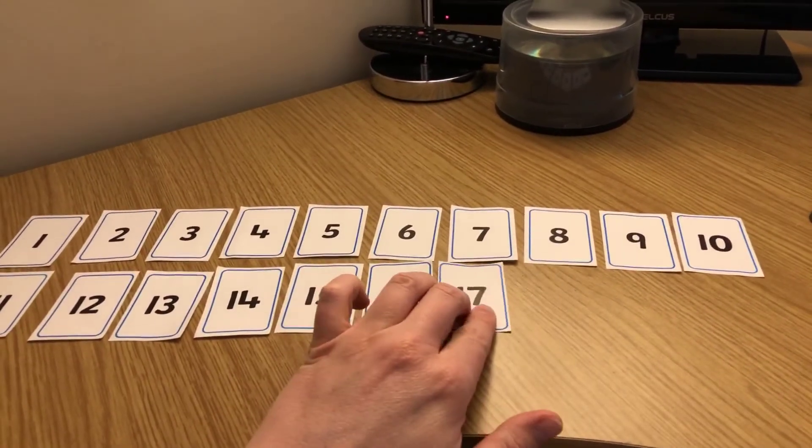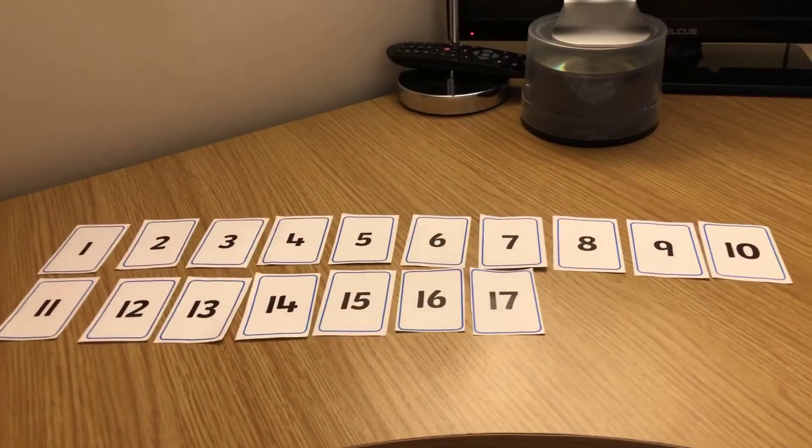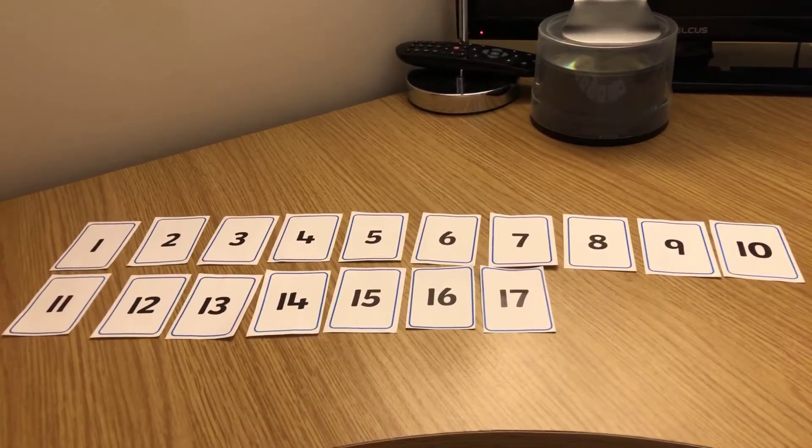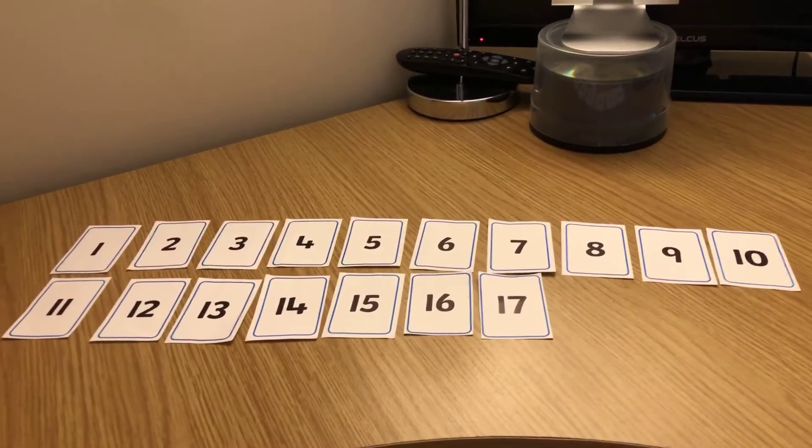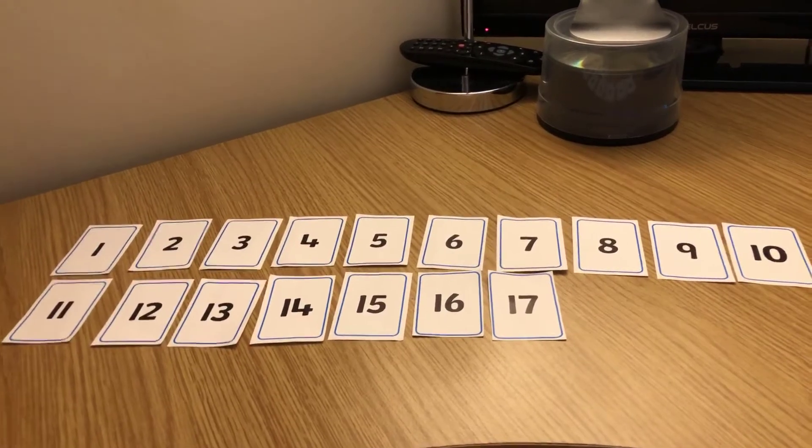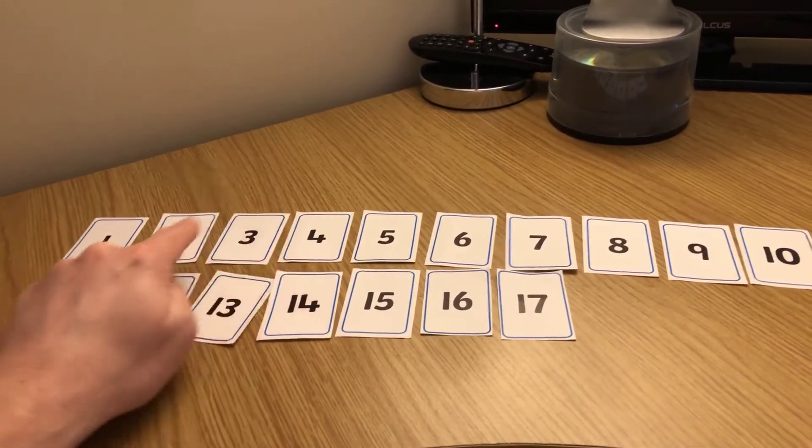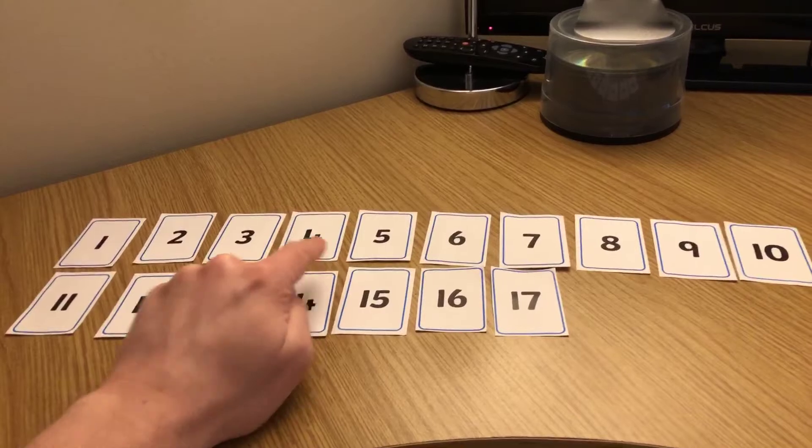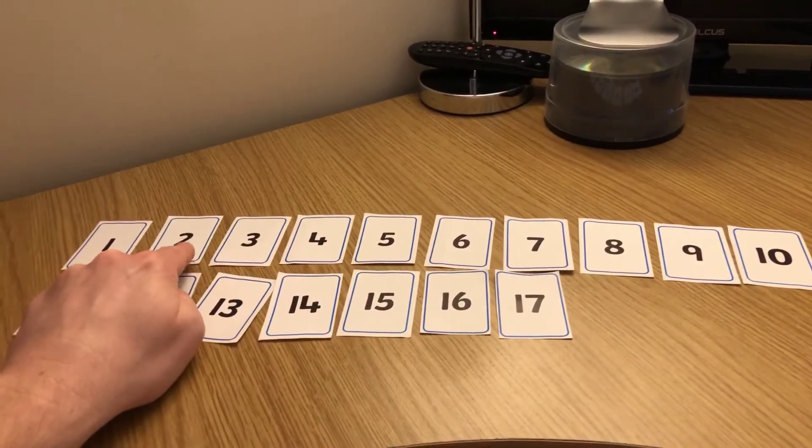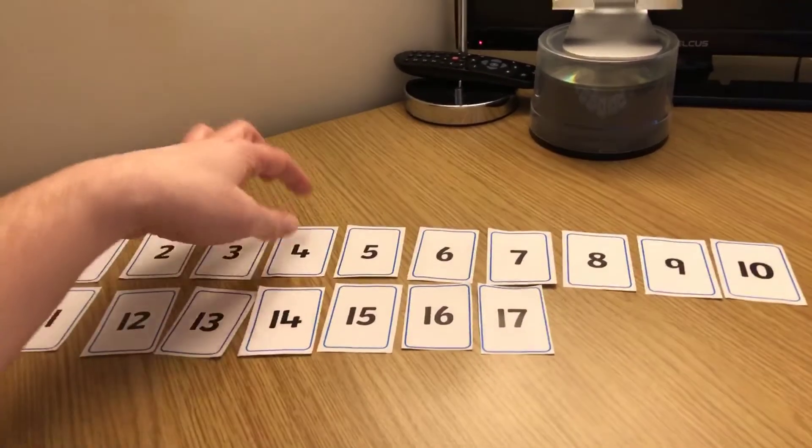I'll do it again. What's the number that is two more than the number two? Quick, easy one. You should have four because you know that double two is four. Two add two is four. One more, two more is four.